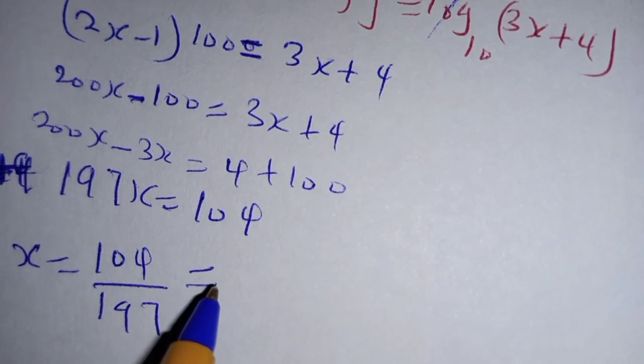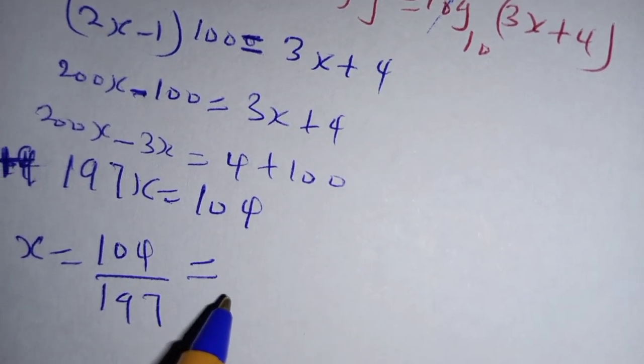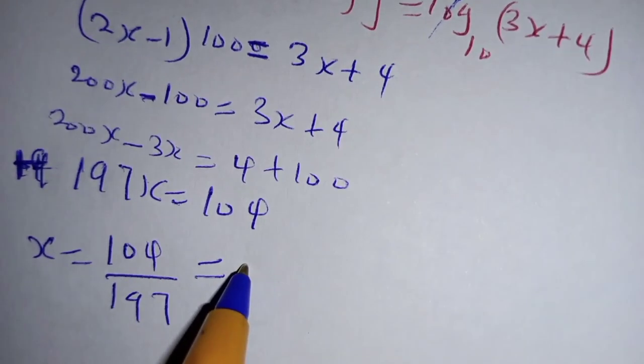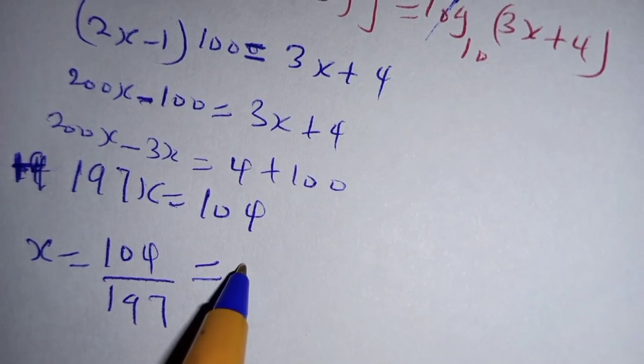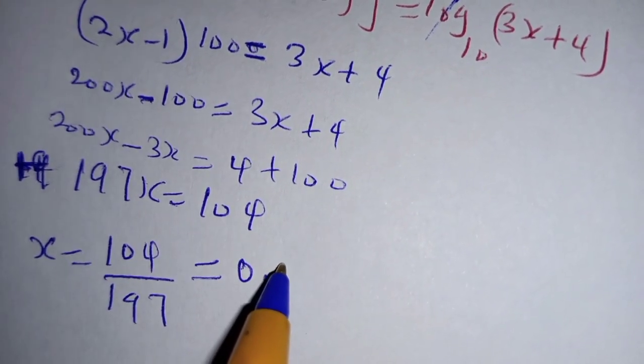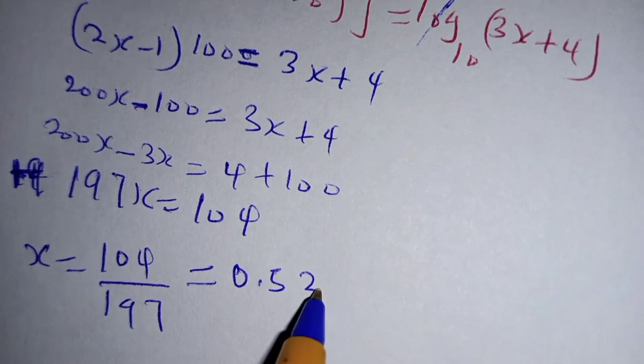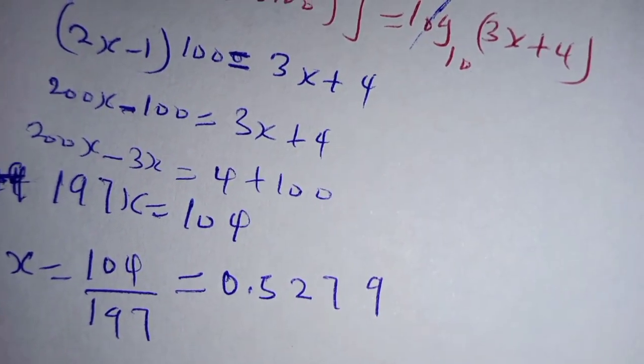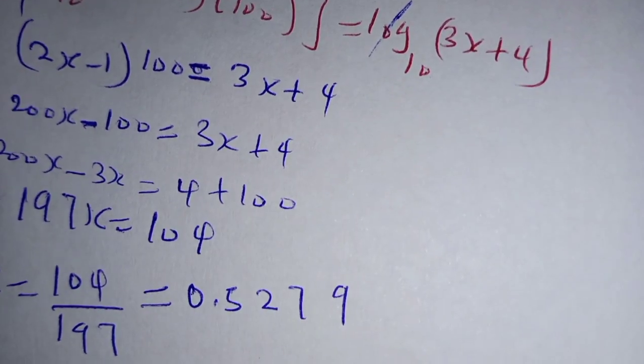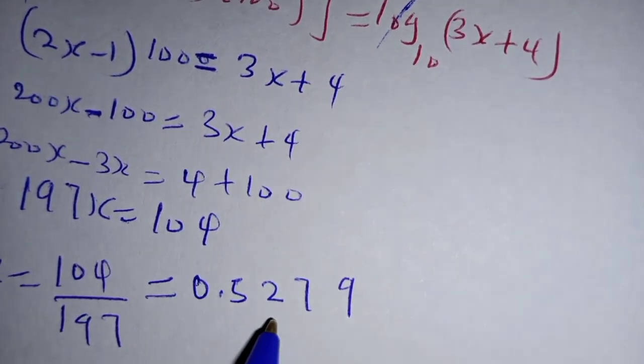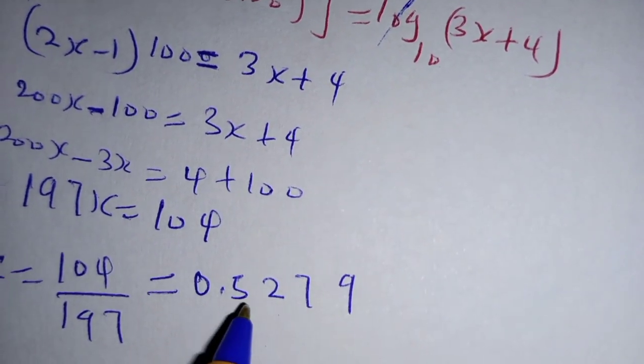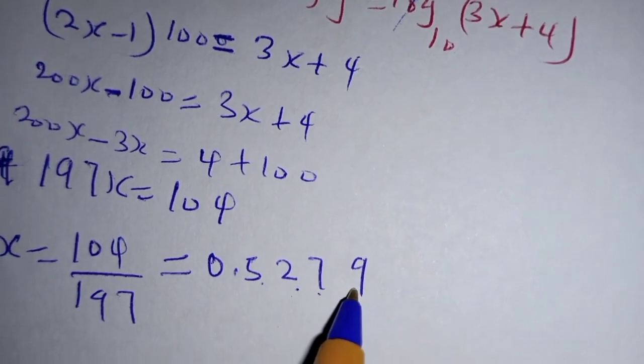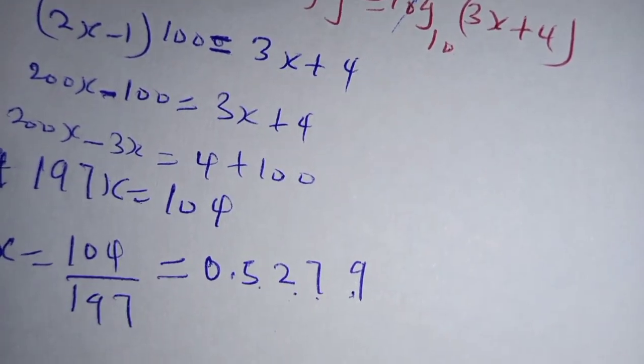Now when you divide, you write the answer correctly to 4 significant figures. Your answer will be 0.5279. From the calculator, you are going to obtain 0.5279 to 4 significant figures. That is the value of x.